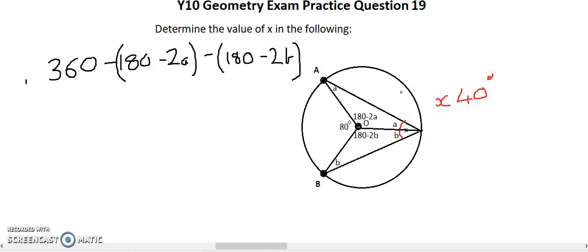Now, I've done it in these brackets for a reason, and the reason is that I really want us to be able to see that that negative applies to everything inside the brackets. So it becomes 360, take away 180, but a negative and negative is a positive, so it's plus 2A.